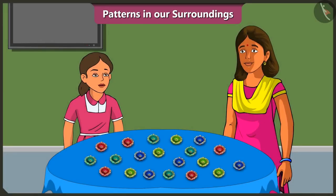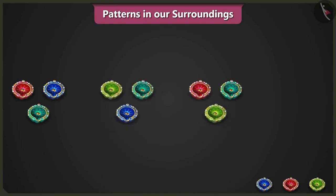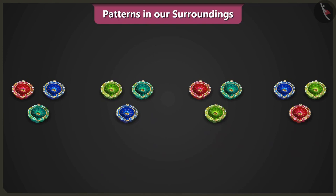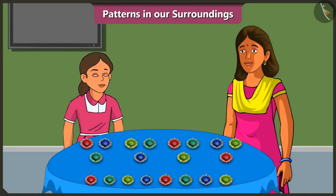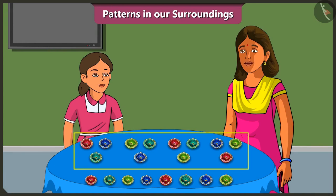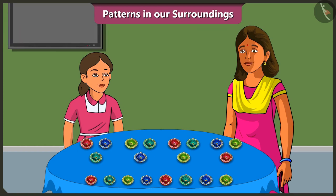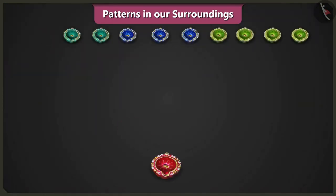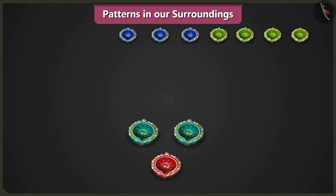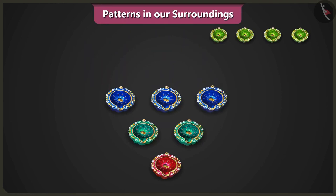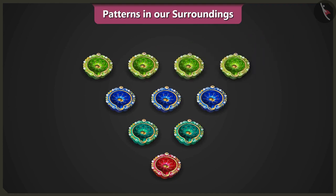For Diwali decorations, they will decorate the courtyard with Diyas. Mummy explains an increasing pattern: place one Diyas, then two Diyas above it, then three Diyas above them, then four Diyas above them — each row increases by one Diyas as you move up.